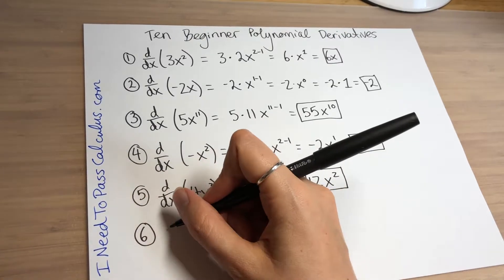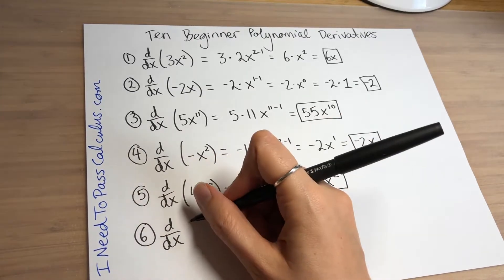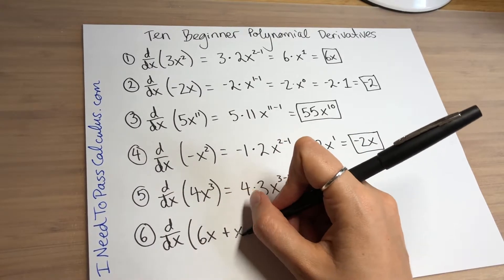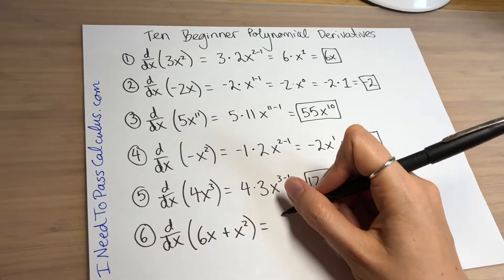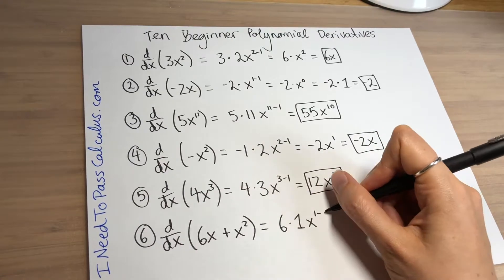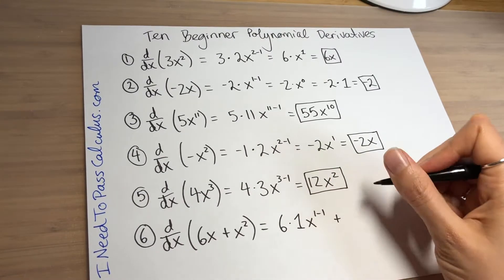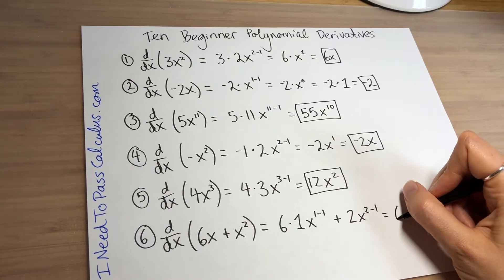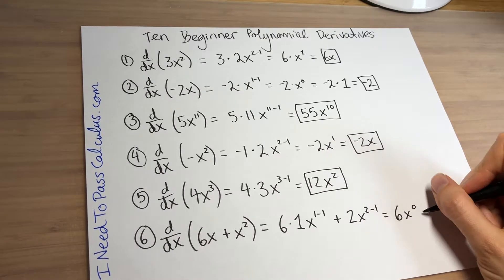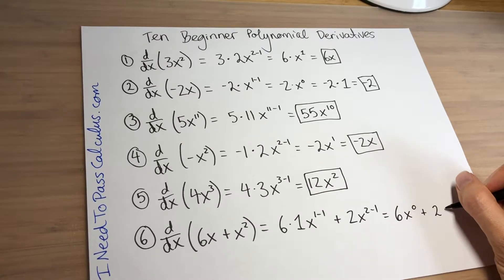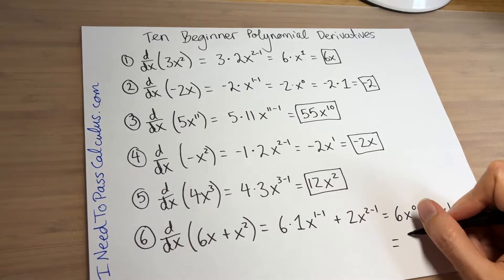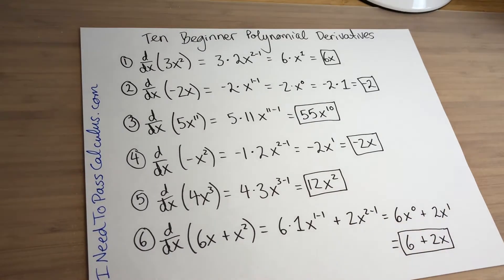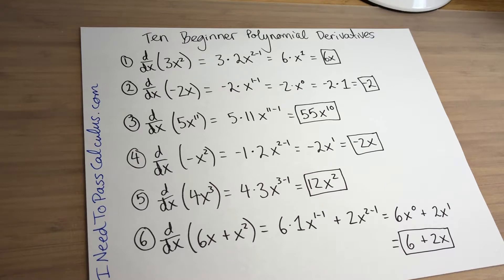One of the nicest properties about derivatives is that if you have more than one term — a plus or minus sign in the middle — you can just take the derivative of each term separately. In problem 6, we take the derivative of 6x plus x squared. For the 6x part you get 6x to the 0, and for the x squared part you bring the 2 down and subtract 1, getting 2x to the 1. Since x to the 0 is 1 and x to the 1 is just x, the final answer is 6 plus 2x.